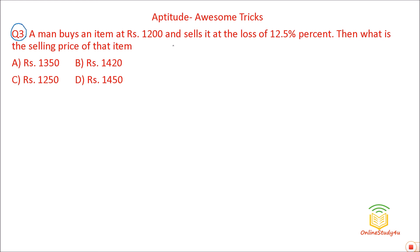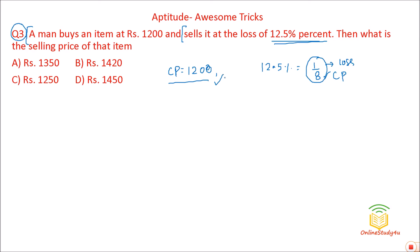Question number 3 is a bit trickier — it involves 12.5%. A man buys an item at Rs. 1200 and sells it at a loss of 12.5%. 12.5% = 1/8. So if you are buying at 8 rupees, you are at a loss of 1 rupee. The actual CP is Rs. 1200, so 8 = 1200, meaning 1 = 1200 ÷ 8 = 150. They are asking for the selling price.